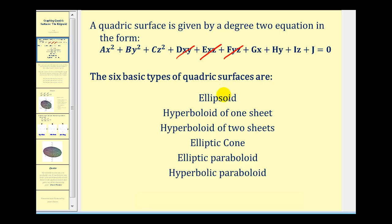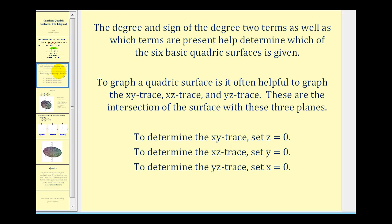In this video, we'll focus only on how to graph an ellipsoid. The degree and sign of the degree two terms, as well as the terms that are present, help us determine which of the six quadric surfaces is given.